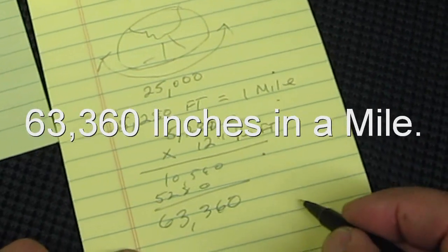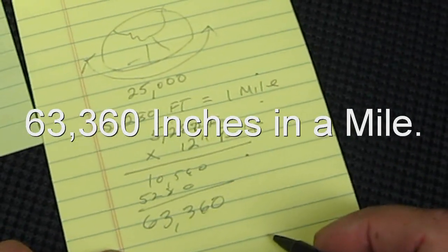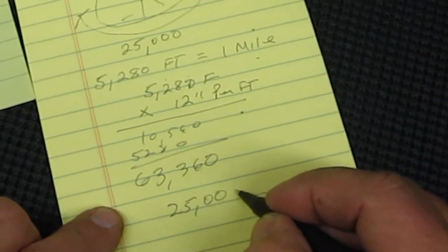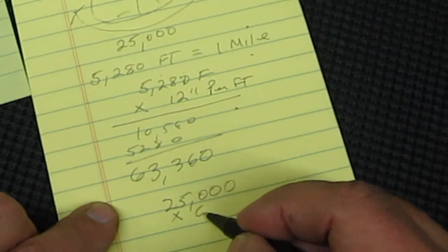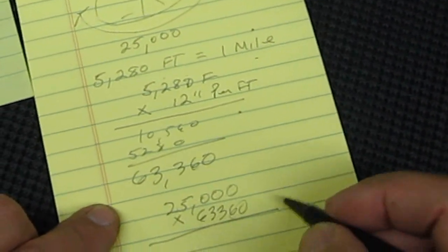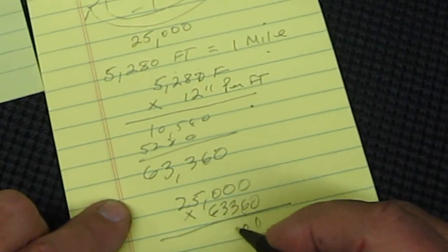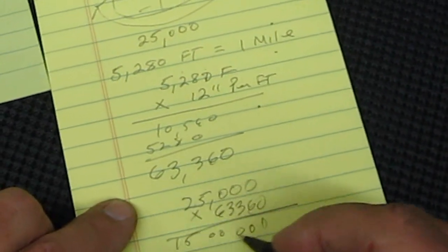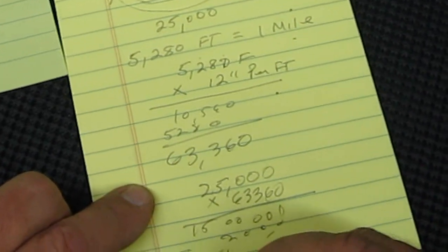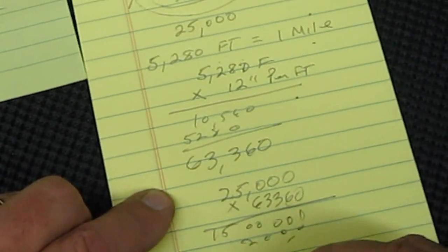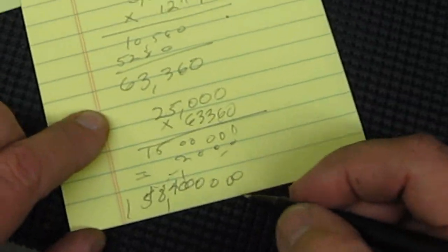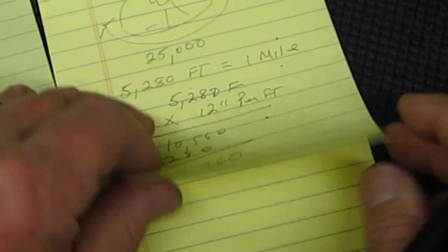Okay, the Earth is 25,000 miles, so we would then take 25,000 times 63,360. And that is... one, two, zero, zero, zero, zero, zero, zero, four, eight, five, one. Okay, let's get that straight here. That number is one, five, eight, four...